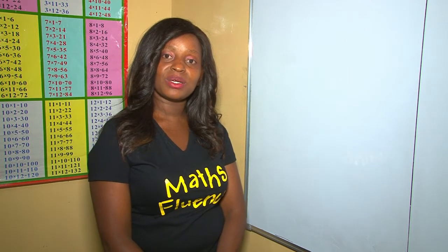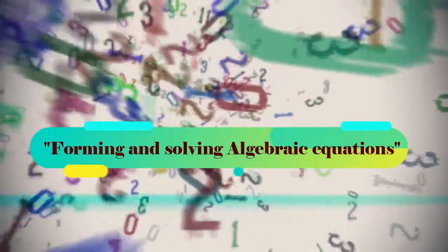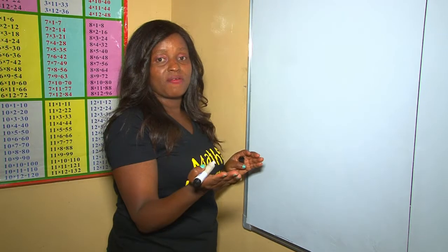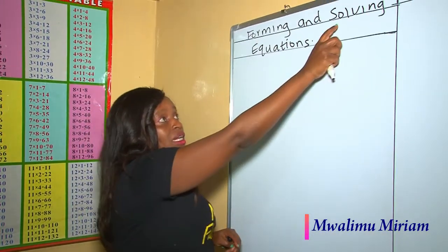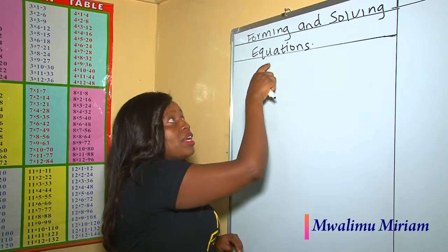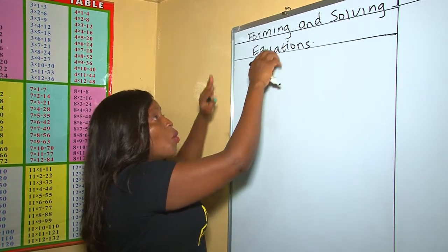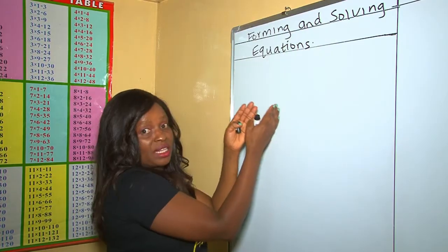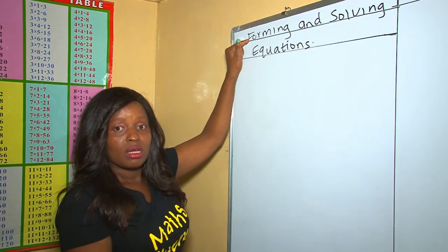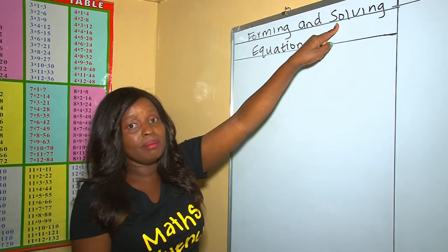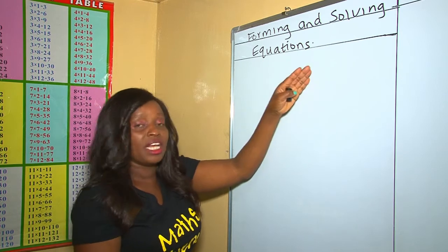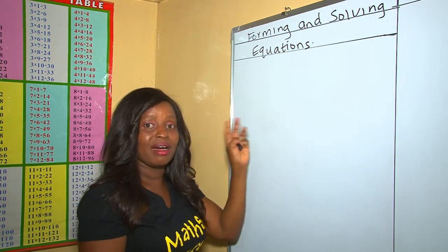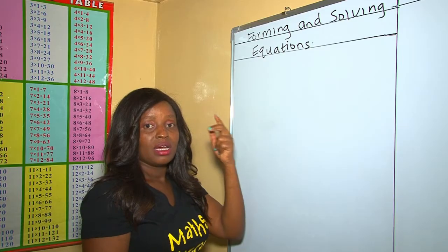Welcome to my YouTube channel. Today's lesson is about forming and solving algebraic equations. In our topic there are three phrases: forming, solving, and equations. We are putting these three things together — forming expressions and solving them using the equal sign, meaning at the end of our working out we shall have an answer.